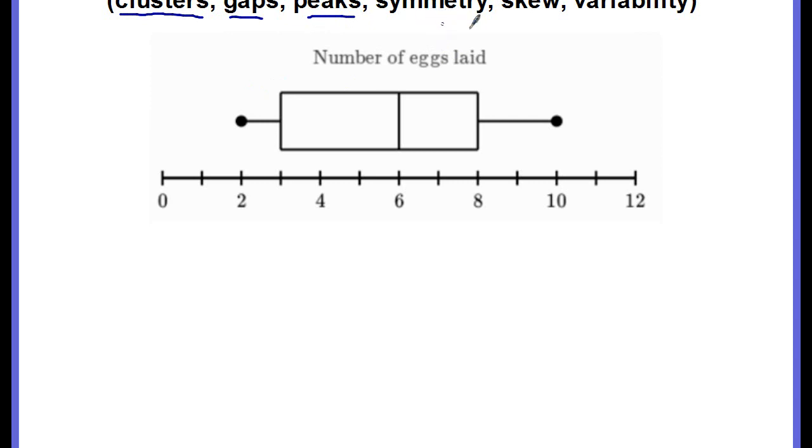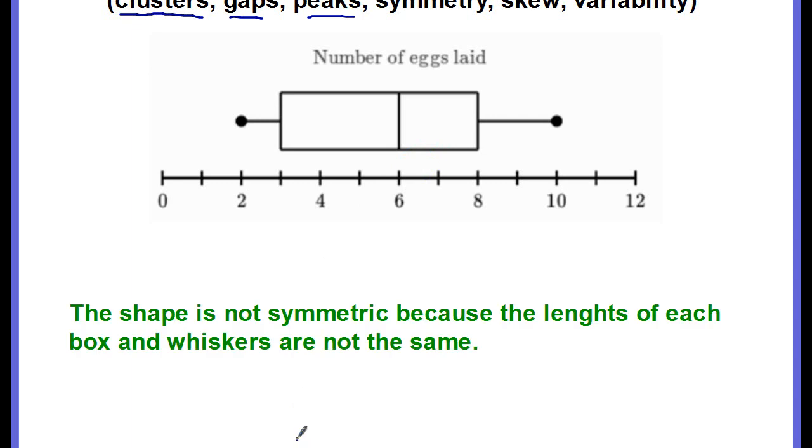What we can talk about is the symmetry. Is it symmetric? Is it skewed? Is there variability in the data? Okay, so looking at this, you could tell that the shape is not symmetric because the lengths of each of the box and whiskers are not the same.